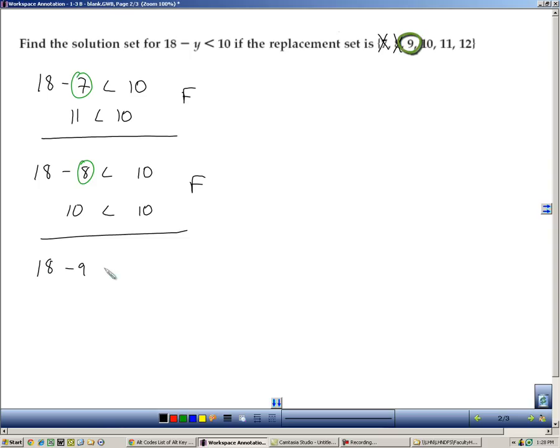The next one is 18 minus 9, which gives us a 9. Is 9 less than 10? The answer there is true. 9 is a solution to this inequality. It's a number that makes the inequality true.